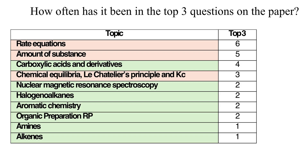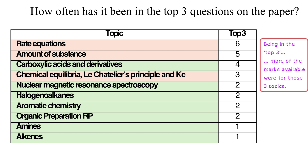The papers are not always balanced, and some topics carry more marks than others. Looking at which topics carry the most marks in the top three per paper over the eight years: for six out of those eight years, rate equations have been one of the biggest three questions on the paper. Amount of substance follows, being one of the big three five out of eight times. Carboxylic acids and derivatives comes third — half the time one of the big three — and Kc chemical equilibria is fourth, appearing three out of eight years.